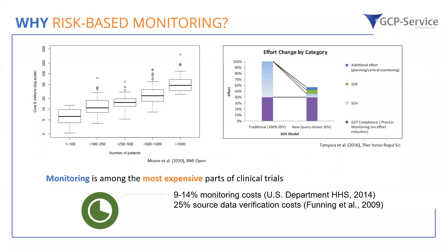There can also be trials — and we have run trials in the past — that have exactly zero on-site monitoring and zero source data verification or source data review. But in many cases, you would have general GCP compliance reviews by monitors. A lot of the remaining source data verification can also be allocated to different types of review and monitoring strategies, which will automatically save a lot of time and effort. This is basically where risk-based monitoring comes into play.